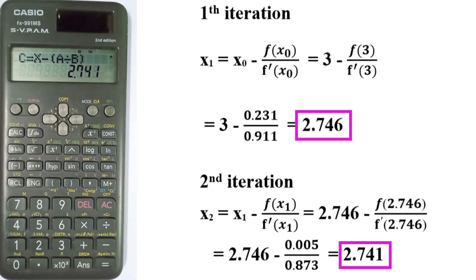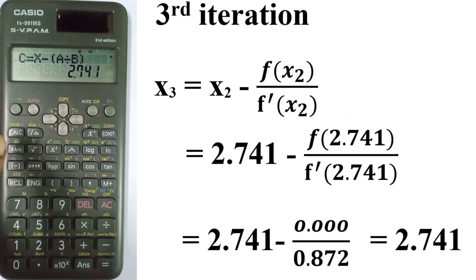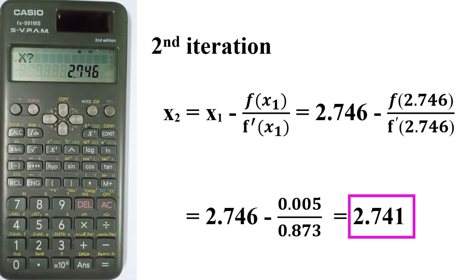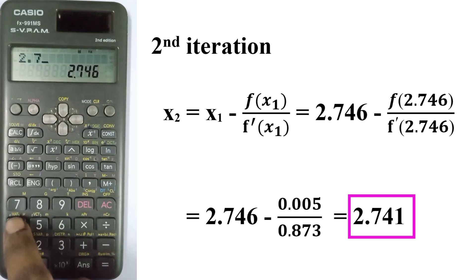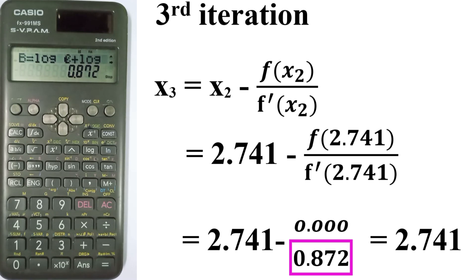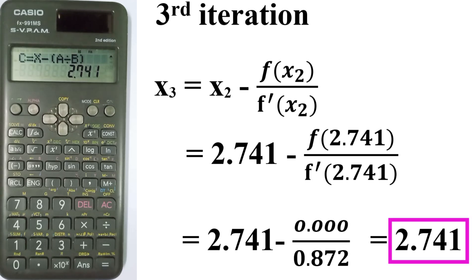For the first iteration, enter x = 3 and calculate. The A value is f(x) = 0.231. Then equals to get B value, that is f'(x) = 0.911. Then equals to get C value, which is x1 = 2.746. For the second iteration, use C = 2.746 as the new x value. Calculate again: A = 0.873.